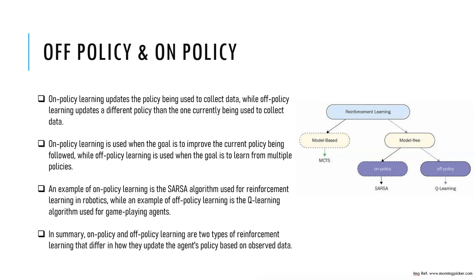For instance, let's say we have an agent learning to play a game of tic-tac-toe. In off policy learning, the agent can learn from different policies — such as random or optimal moves — while collecting data using a different policy. This allows the agent to learn from all possible moves and select the best move based on the highest expected reward.